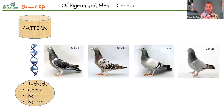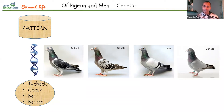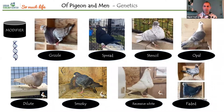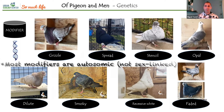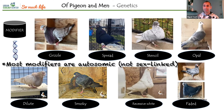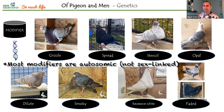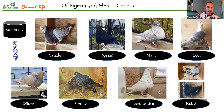Those are the only four patterns pigeons may have: T-check, check, bar, and barless. T-check is dominant over check, check is dominant over bar, and bar is dominant over barless. Bar is the wild type. Barless is recessive and more difficult to breed, but we can do it. Modifiers are not in the sex chromosome — they are autosomal — so both females and males can carry them.